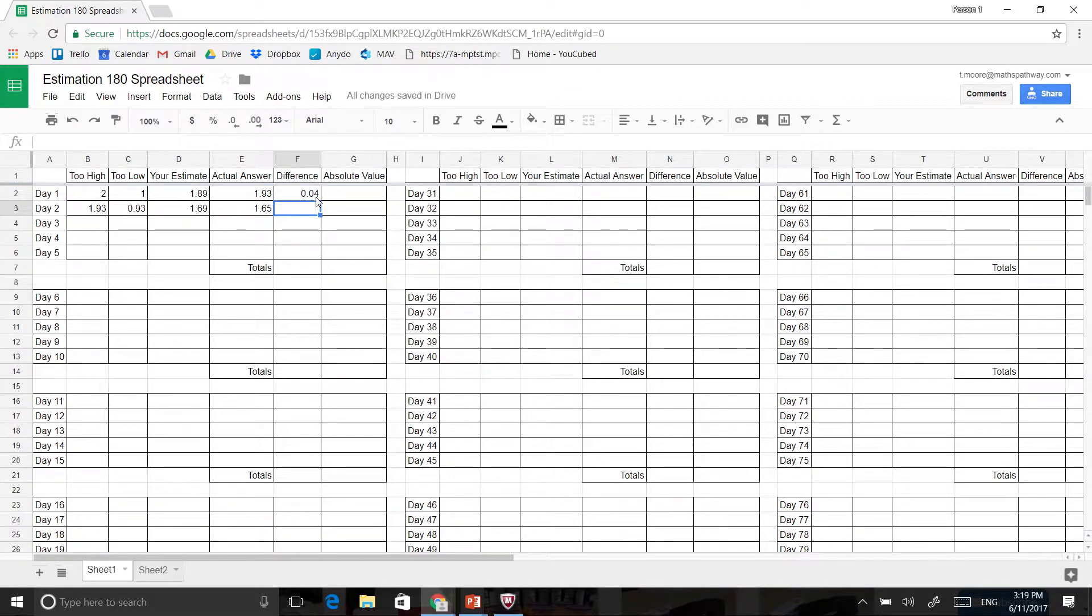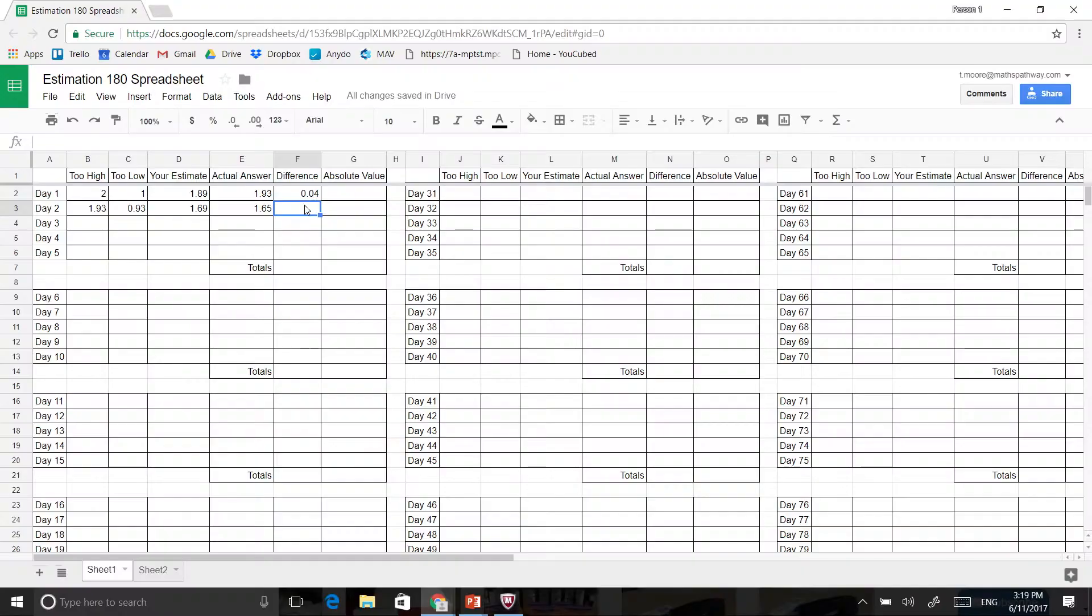Now, of course, it was 0.04 or four centimetres. Now, if I have a look at this again, what you can see here, I'll do exactly the same thing again. So I want to find out what the difference was. So I'm going to go E3 because this is in the cell E3, and then minus D3. So I go equals and I go E3 minus D3, press enter.